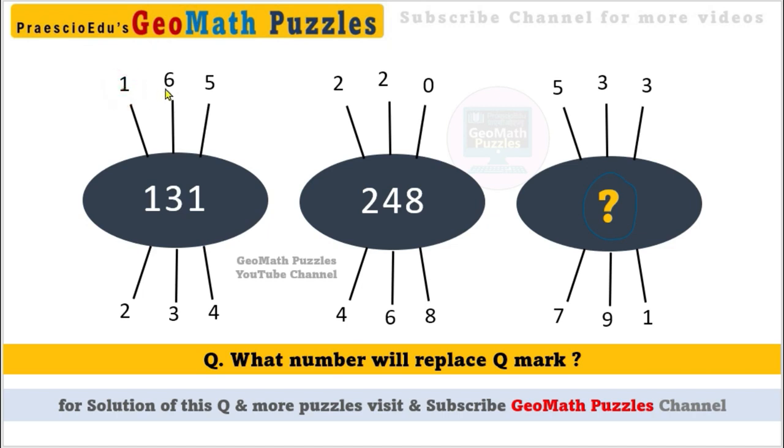So, 1-6-5 and here 2-3-4, and at the middle there is a 131 number. And here at the middle 248, and at the top 2-2-0, and at the bottom side 2-6-8.